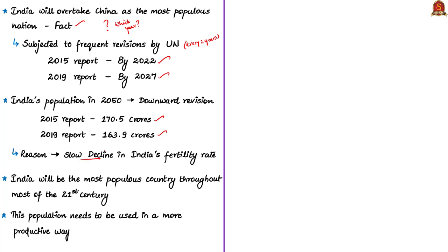The author considers the declining fertility rate a good sign. Though the population is likely to reduce, India will still be the most populous country throughout most of the 21st century — that is still until 2100, which is 80 more years from now. The author stresses that India needs to focus on three critical issues so that this growing population can be used productively for India's welfare.